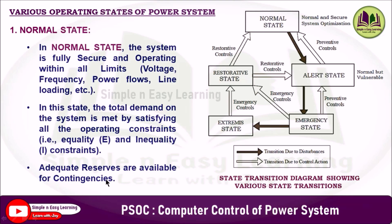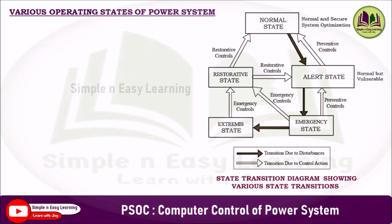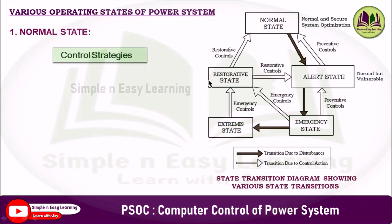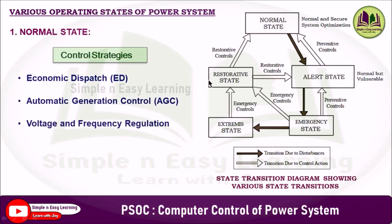Adequate reserves are available in normal state for contingencies. A contingency is an unexpected event or failure that affects normal system operation. Common types include generator outage (a power plant suddenly going offline), transmission line outage (a power line disconnected due to fault or maintenance), transformer failure, or a sudden increase or decrease in load. Control strategies in normal state include economic dispatch, automatic generation control, voltage and frequency regulation, optimal power flow, reserve management, and balancing.